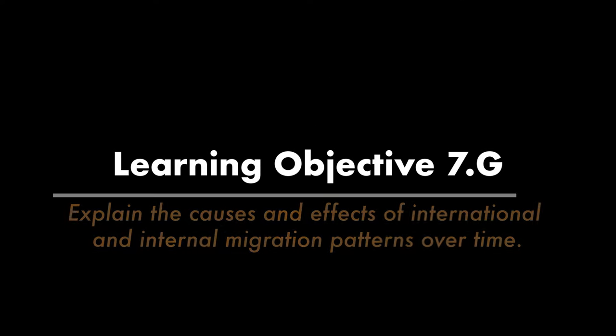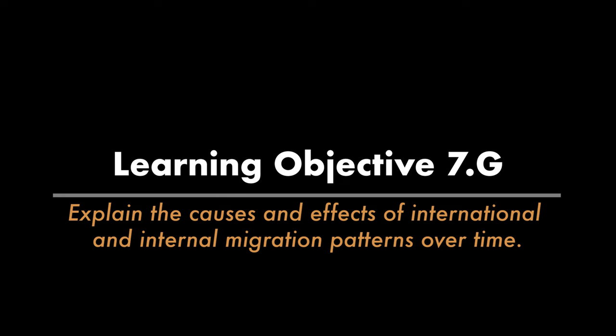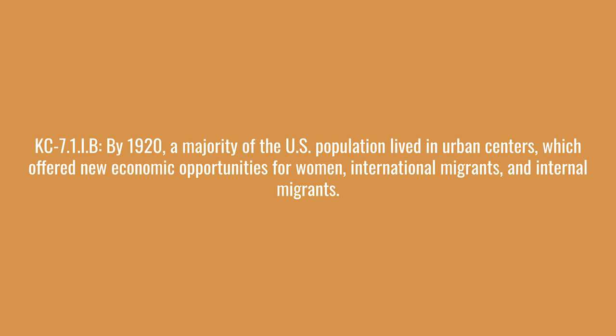The first learning objective is to explain the causes and effects of international and internal migration patterns over time. The first key concept says that by 1920, a majority of the U.S. population lived in urban areas, which offered new economic opportunities for women, international migrants, and internal migrants.